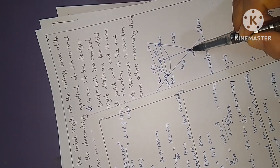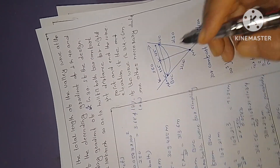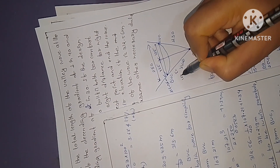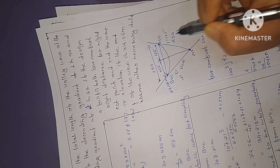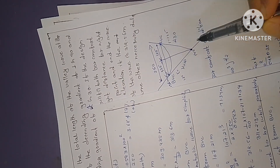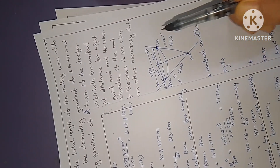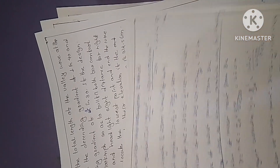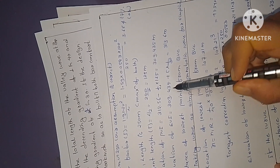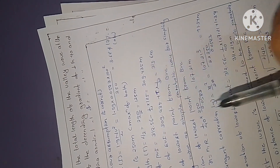The elevation of PVI equals the BVC elevation minus the slope times the tangent length. For the end of the curve (EVC), the elevation of PVI is adjusted using the ascending gradient of 1/30 times the tangent length to get the elevation at the EVC.